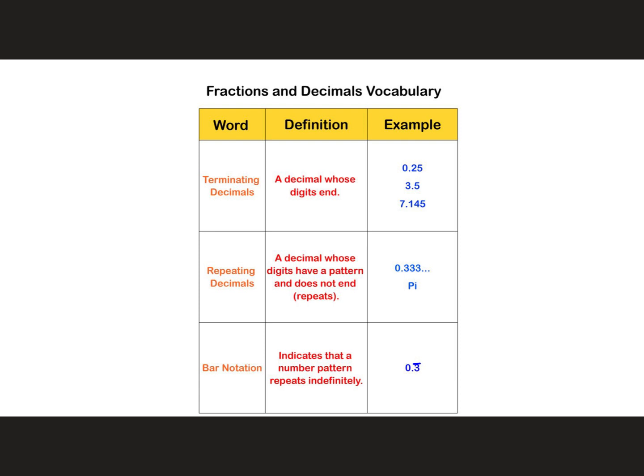When we have a decimal like that, we use bar notation. This indicates that a number pattern repeats indefinitely. So that bar goes over the part of the decimal that repeats, like they have in that example there. Or it might be something like, which means it keeps going 2, 5, 2, 5, 2, 5, and forever.